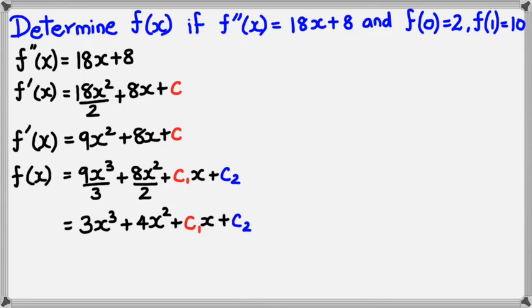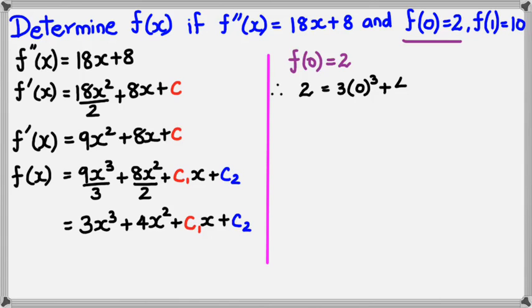Now, using the two points that we have been given, we can actually figure out c1 and c2. So the first one that I'm going to do is f of 0 is equal to 2, which means when I substitute it back into the original function, I'm going to get 2 equals 3 times 0 cubed plus 4 times 0 squared plus c1 times 0 plus c2. And because 0 is in every one of those terms, I know that c2 is equal to 2.